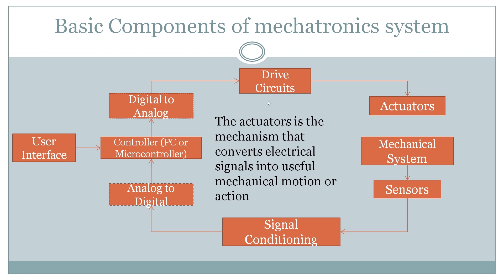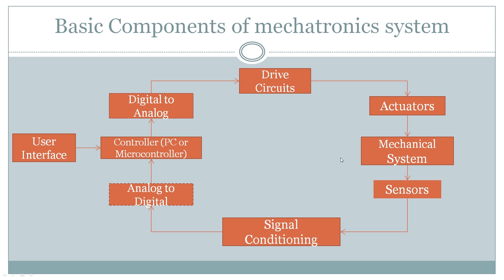That amplified signal is then sent to the actuator. An actuator is the mechanism that converts an electrical signal into useful mechanical motion or action. Since the controller only provides electrical signals, which cannot directly produce mechanical motion, we require actuators such as servo motors, stepper motors, or pneumatic and hydraulic actuators. With the actuator, we achieve the desired task and operation in the mechanical system. These are the basic components of a mechatronics system — without them, the system is incomplete.